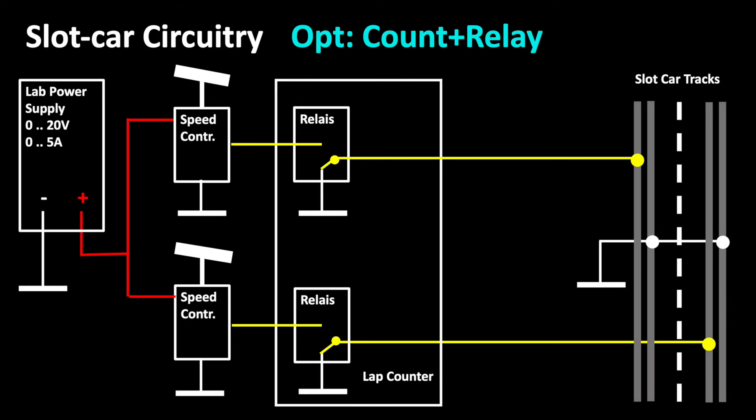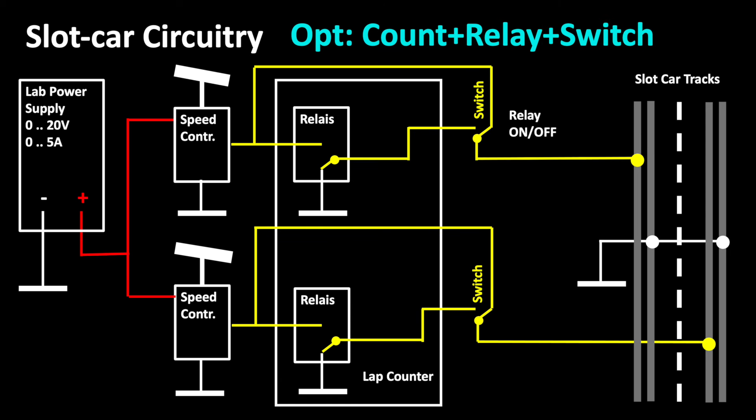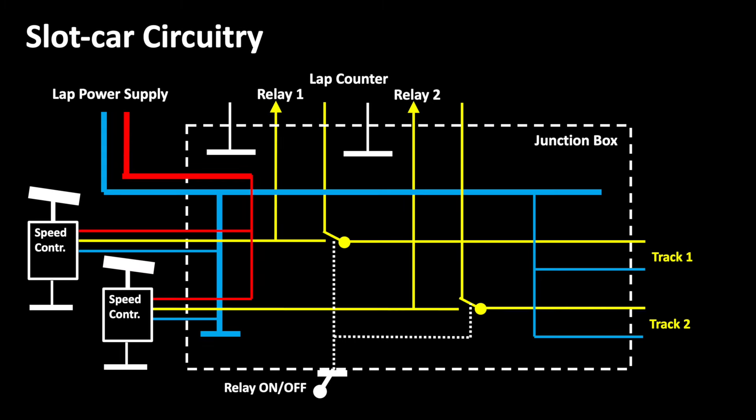Now we would like to have a switch to bridge the two relays. We need it in case we don't want to use the lap counter or in case we want to use the set expert mode. We install the double switch in our distribution box or on our control panel. Here we see the wiring.